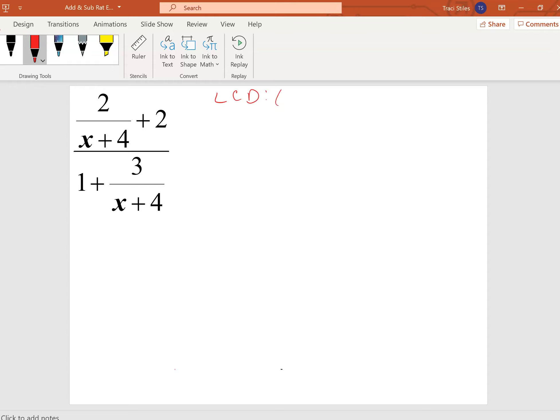The least common denominator is x plus 4. We're going to multiply each term by x plus 4, and hopefully this time we'll get to the end of this video and I'll be able to go to the next slide.